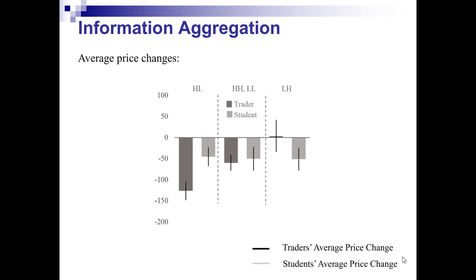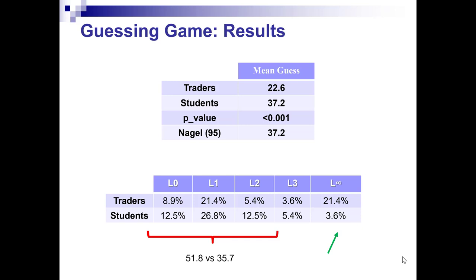In our experiment, we also asked subjects to participate in a guessing game where they have to guess two-thirds of the average. For the students, we observe a mean guess of 37.2, perfectly in line with previous results. For the traders, we observe a lower number — the mean guess is 22.6. Note also that 21.4% of traders were level infinity, meaning they chose either 0 or 1, against only 3.6% of students. Essentially, traders choose lower numbers than students.